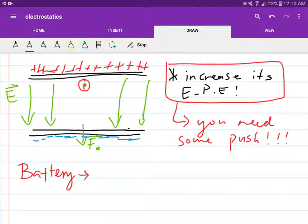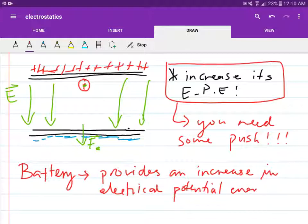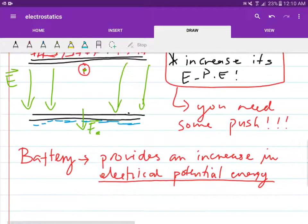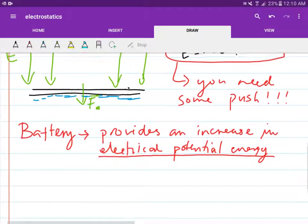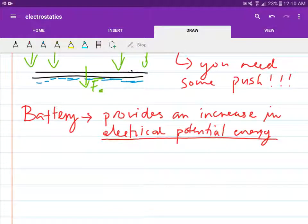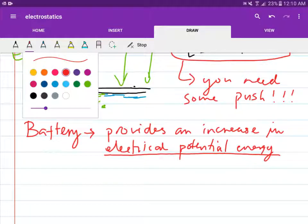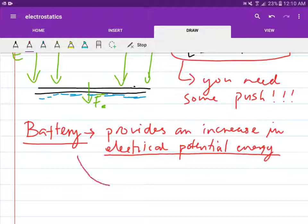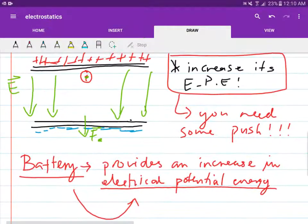The battery provides an increase in electrical potential energies of this positive charge. So how do we know how much this battery increases the electrical potential energy of this charge?